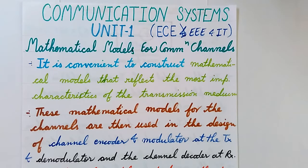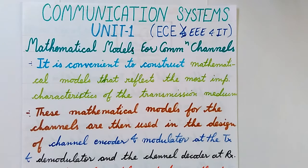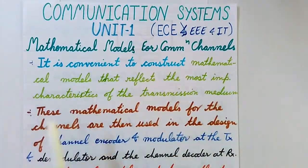We have already discussed the different communication channels in previous videos, and now we want to establish some mathematical equations for the different communication channels available. When we set up a communication system, we require knowledge of which type of physical channel we are going to deal with, and how we can analyze and design the transmitter and receiver. For this, we need some kind of model which can describe the various characteristics of a communication channel.